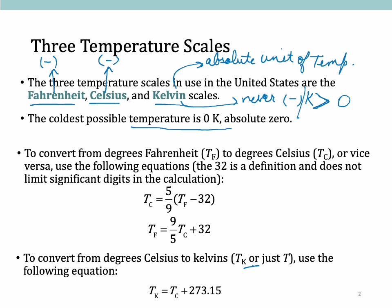For example, if temperature is 25.0 degrees Celsius, what is it in Kelvin? Temperature in Kelvin is degree Celsius plus 273.15. So 25.0 plus 273.15 gives you 298.2 Kelvin.